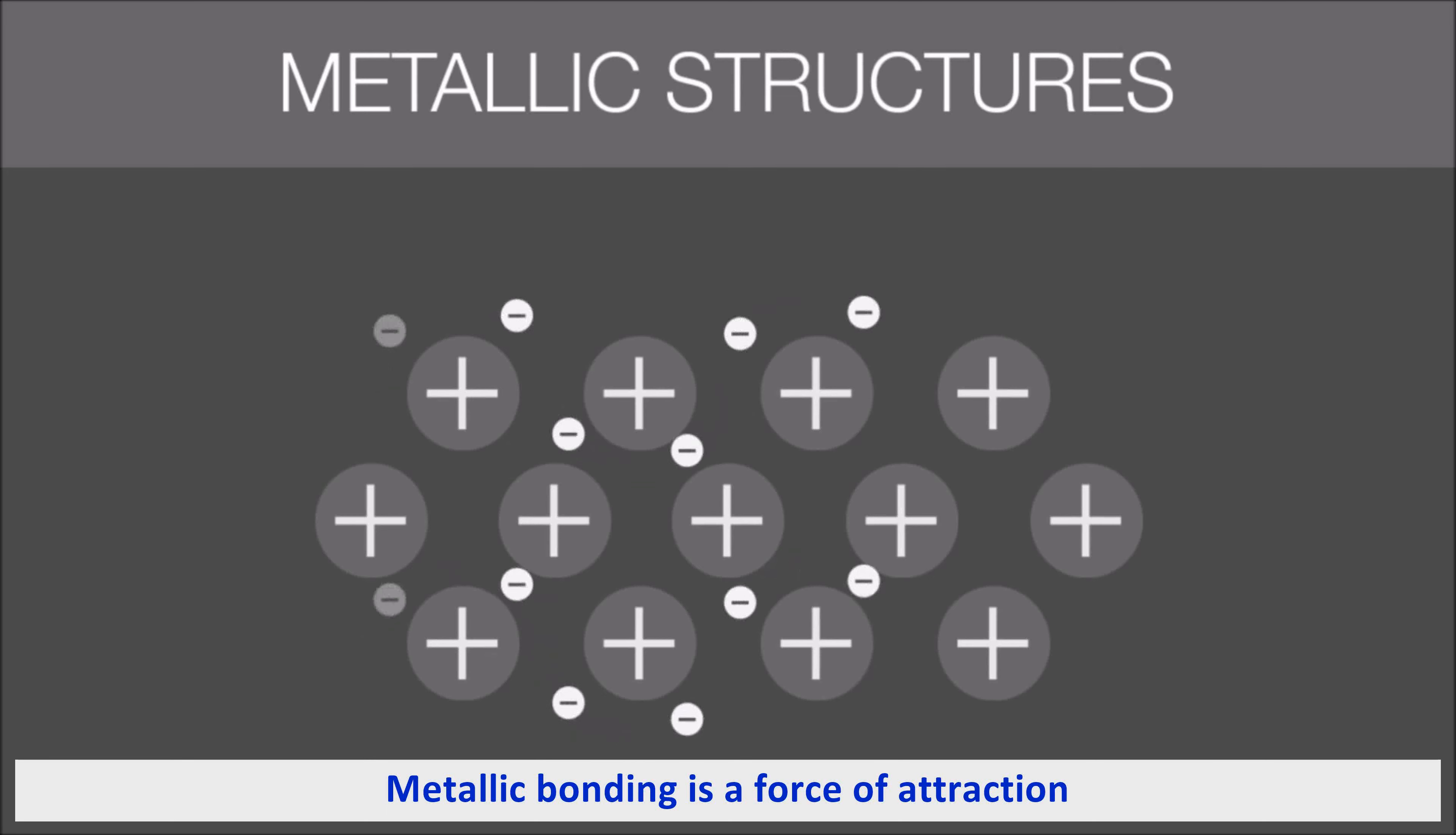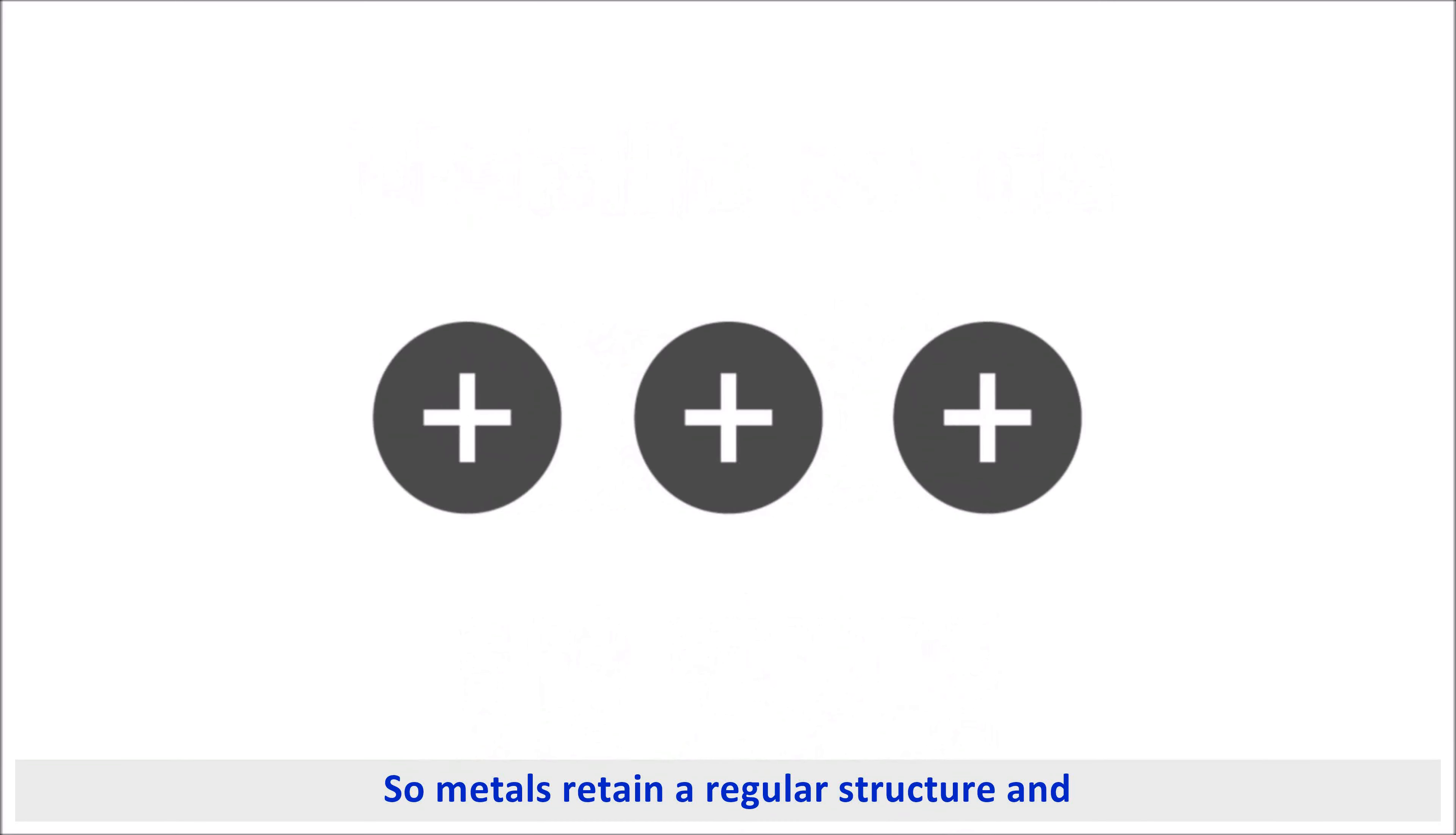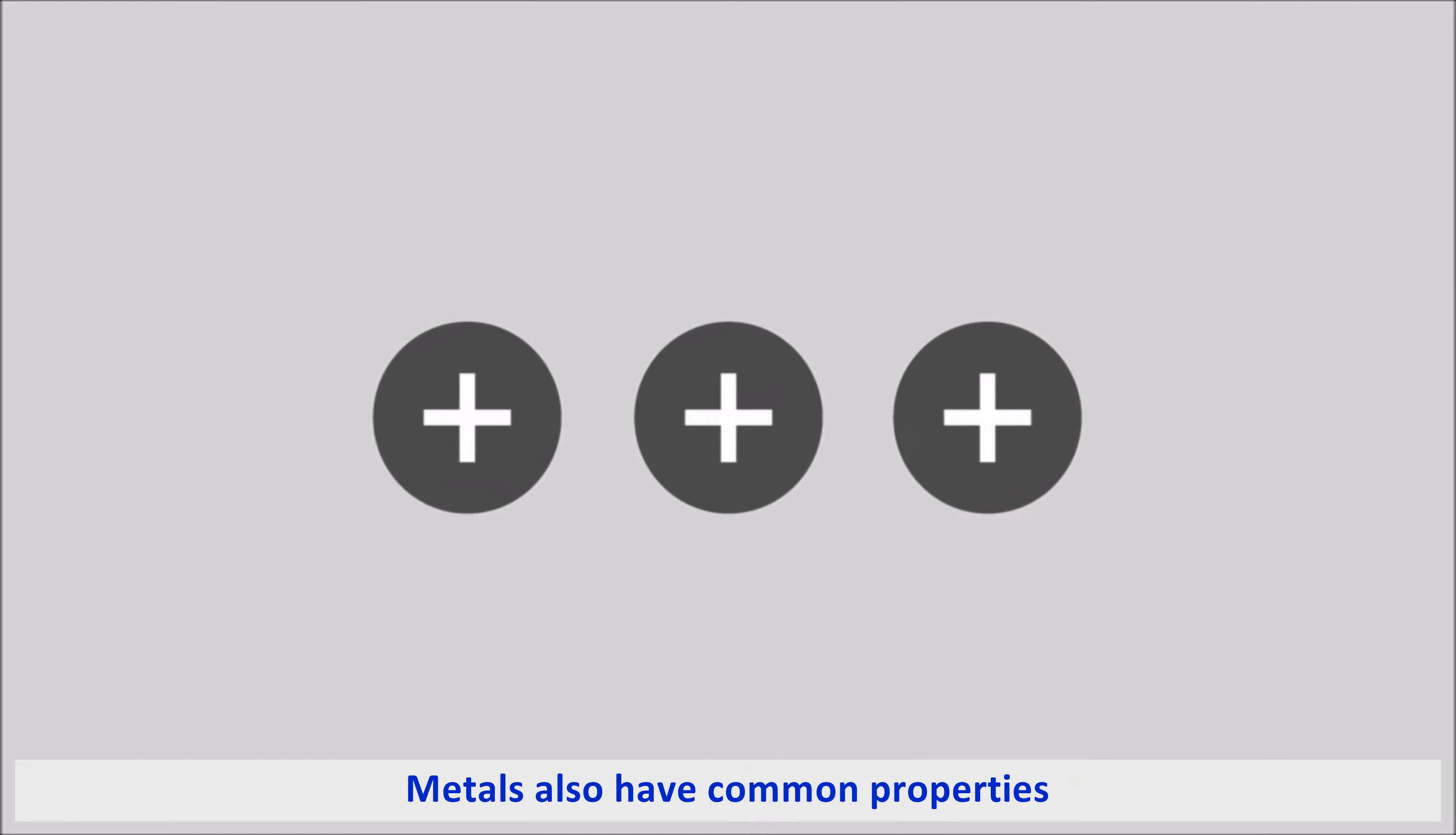The metallic bond is a force of attraction between these free electrons and the positively charged metal ions. Metallic bonds are strong, so metals retain a regular structure and usually have high melting and boiling points.